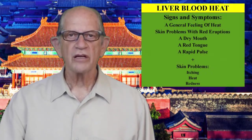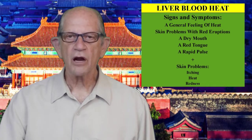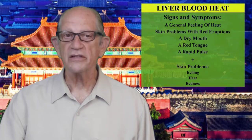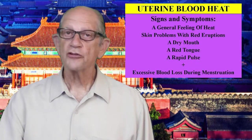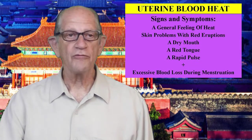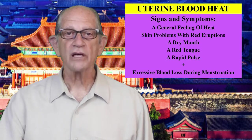If liver blood has heat, there will be skin problems characterized by itching, heat, and redness. If the uterus and the chong or penetrating channel are affected by blood heat, there will be excessive blood loss during menstruation. The deficiency pathologies associated with blood are blood deficiency and blood loss, which is one cause of blood deficiency.